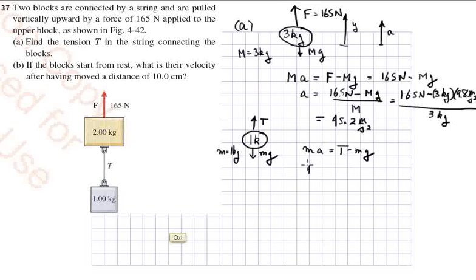I can state that T is equal to M times A plus G, MA plus MG, and I'm factoring the M out. So that turns out to be 1 kilogram times 9.8 meters per second per second plus the previously calculated A, 45.2 meters per second per second.